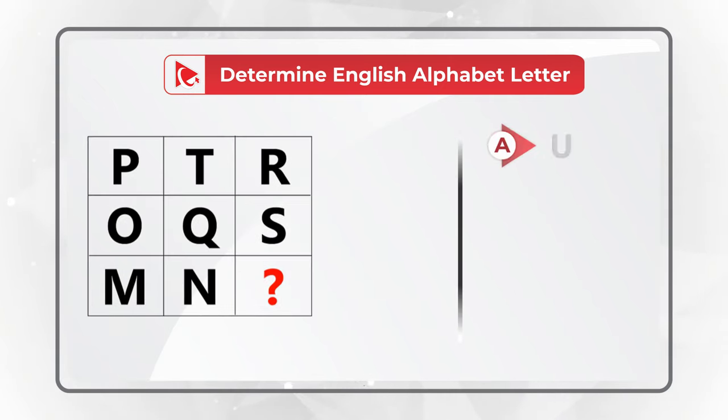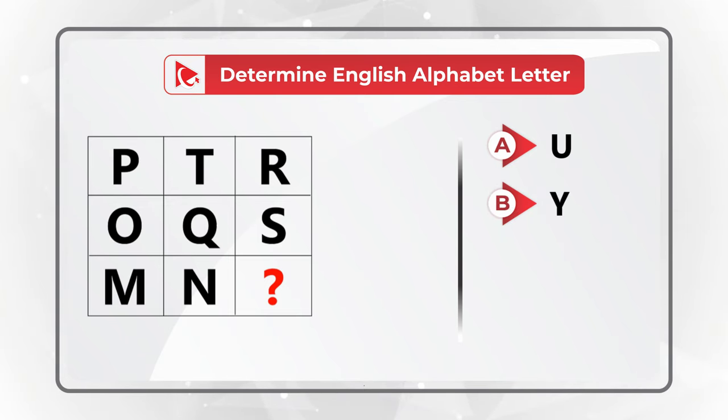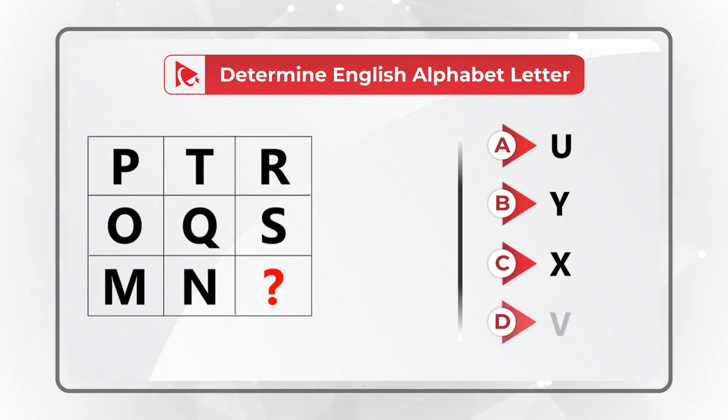You need to select the missing letter from one of four possible choices: Choice A, U. Choice B, letter Y. Choice C, letter X. And choice D, letter V. Do you see the answer?